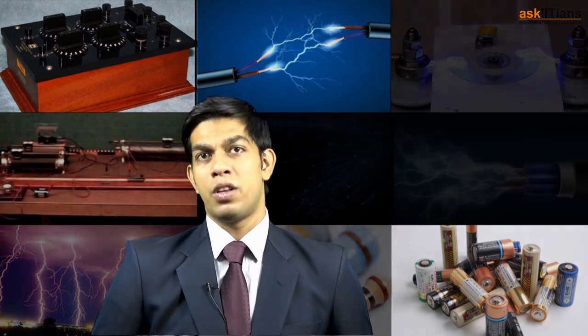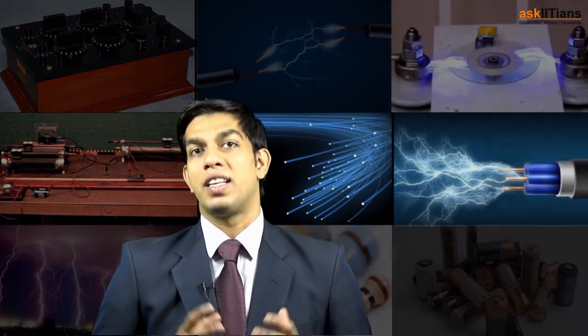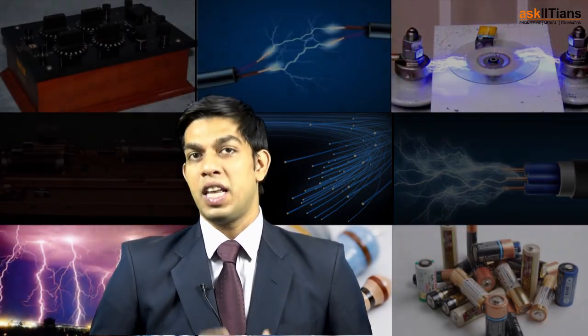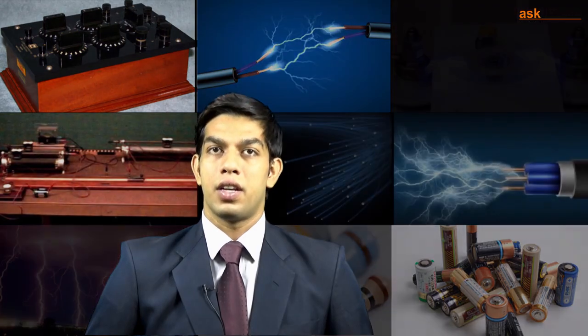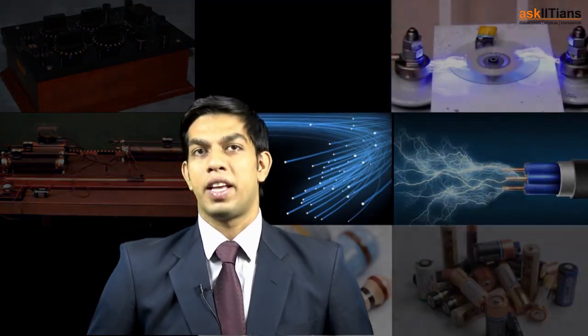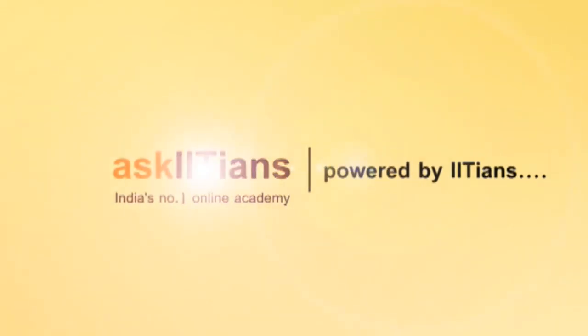So we just studied about how to decode the color codes in carbon resistors and how to solve series and parallel combinations in electric circuits. So now we'll shift our attention to understand what exactly a cell is. Is it the same cell which drives current in the circuit? So stay tuned for my next part. Thank you.